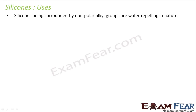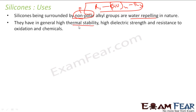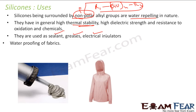Let us understand the uses of silicones. Since silicones are surrounded by nonpolar alkyl groups, they are water-repelling in nature. They have very high thermal stability and are used as sealants, grease, and electrical insulators. They are also used for waterproofing fabric because of their water-repelling nature.